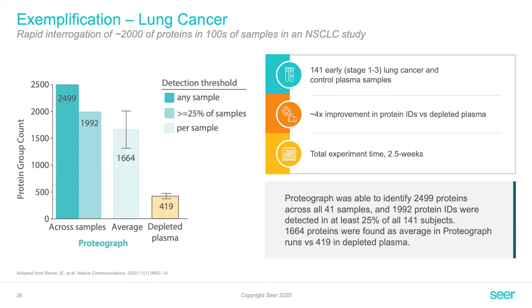Next we assessed the utility of nanoparticles to investigate a clinical cohort. We took 141 cancer subjects and healthy controls and interrogated their plasma proteome down to a depth of 2499 proteins using a panel of five different nanoparticles. Depletion of these samples only yielded around 490 proteins, indicating that with a five-nanoparticle panel you can get a much deeper proteome and potentially much better readout in terms of biological signatures at the protein level.